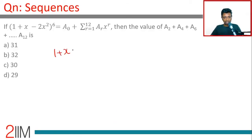We have (1 + x - 2x²)⁶ equals A₀ + A₁x + A₂x² + A₃x³ all the way till A₁₂x¹². This is a binomial expression, but the pain point here is you can't expand it easily because there are three terms.